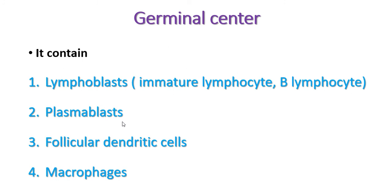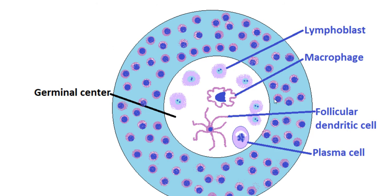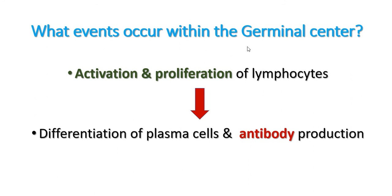The germinal center contains lymphoblasts, which are immature lymphocytes, as well as B lymphocytes, plasmoblasts, follicular dendritic cells, and macrophages. This is a secondary lymphatic nodule. This center part is light staining and is known as the germinal center, which contains lymphoblasts.